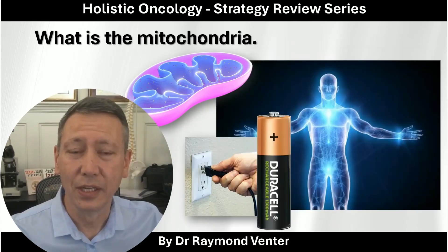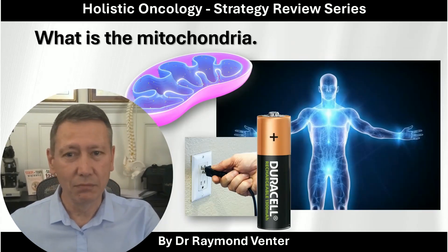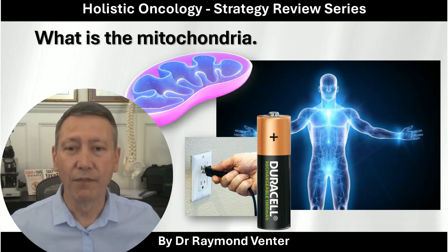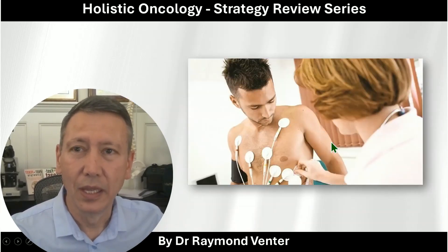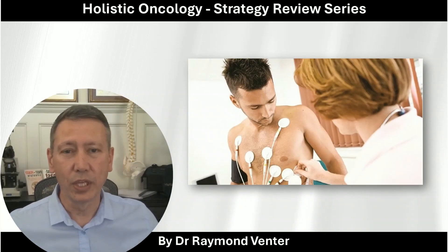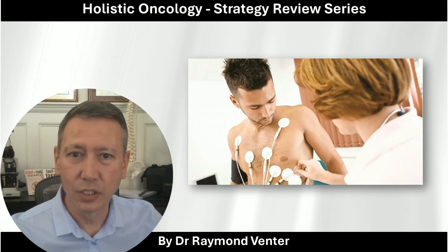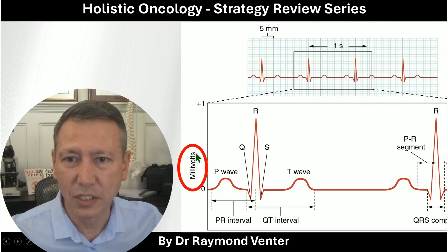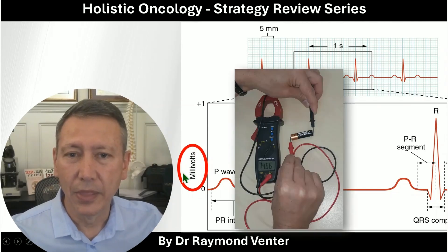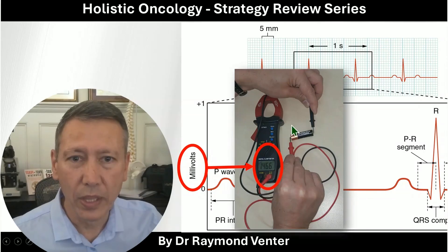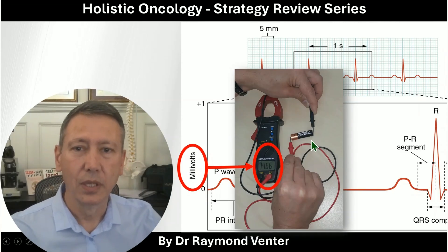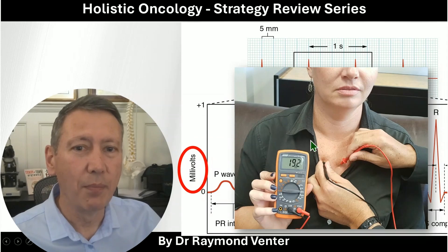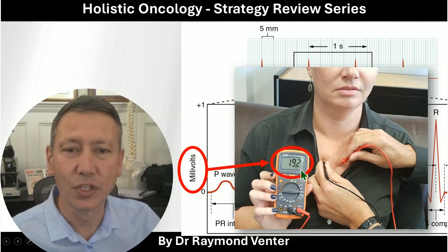Just like a power station giving us 110 or 220 volts, the mitochondria is like a battery — just a much smaller one. Our body works with battery energy. To prove this: when a doctor does an ECG, what are they doing? They're listening to the heart, but it's determined in millivolts. That's just a form of energy. You can literally measure a battery at 1,500 millivolts, and similarly our body can also be measured in millivolts.